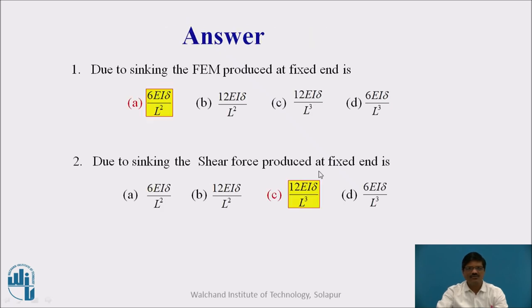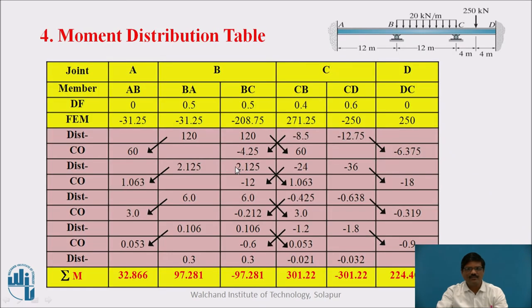Welcome back. Those are the answers for those questions. Now for the most important part: after obtaining all the distribution factors and fixed end moments, this information is filled into the standard moment distribution table. The joints are A, B, C, and D. At B we have members BA and BC; at C we have CB and CD; at D we have DC. The distribution factors are: at B, 0.5 and 0.5; at C, 0.4 and 0.6.